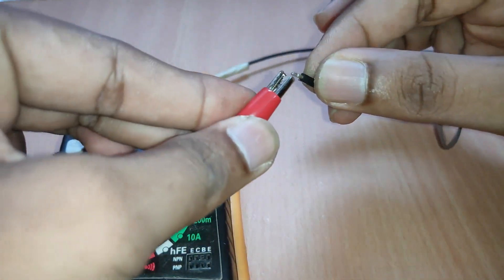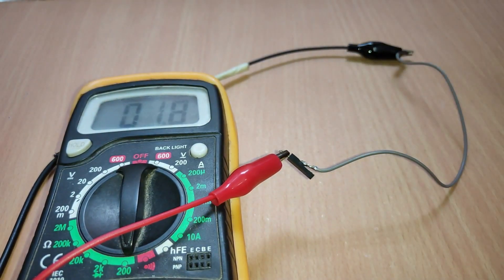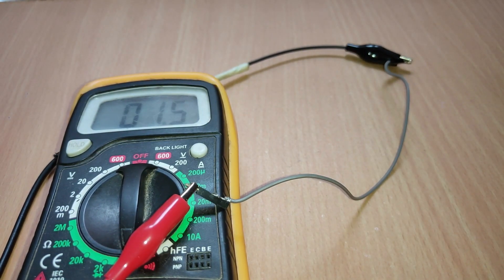Even a piece of wire contains some resistance, which depends upon the material, cross-sectional area, and length.